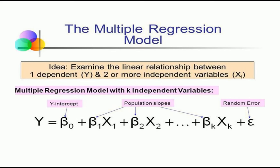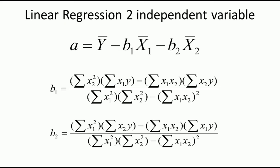For our example we have only two independent variables, so the equation becomes: y = β0 + β1x1 + β2x2. Ignoring the random error ε for this demonstration, the final equation is y = β0 + β1x1 + β2x2. I will refer to β0 as 'a' (the intercept), and the coefficients as b1 and b2, which we need to calculate.